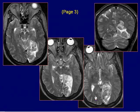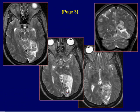T2-weighted MRI images of the same patient demonstrate left occipital lobe cortical gray and subcortical white matter hyperintensity with associated mass effect and effacement of the left occipital horn of the lateral ventricle.